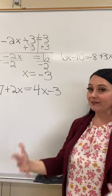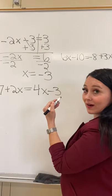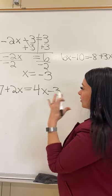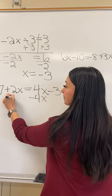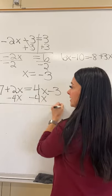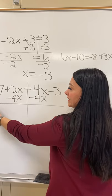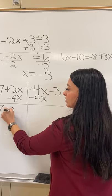I just typically have a habit of I try to keep my x's on the left and then my numbers on the right. But you don't necessarily have to do it that way in order to get it right. So I'm going to subtract 4x from both sides as my first step. Because I like all my x's to be on the left of the equal sign. So I bring down my 7. 2x minus 4x is negative 2x.